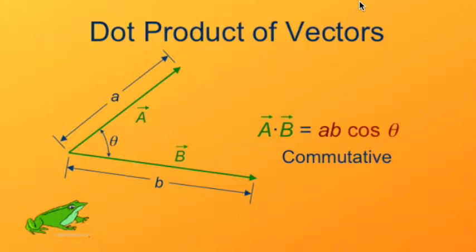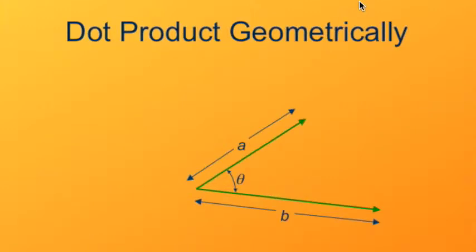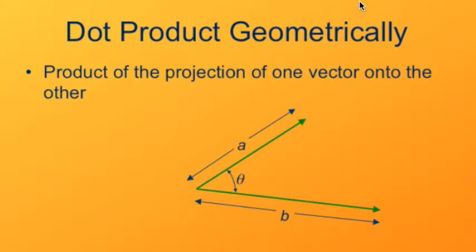There's kind of a neat interpretation of the dot product geometrically, and it can be thought of as the overlap between the two vectors. If you project one vector onto the other vector, in other words, if you take the component of one vector in the direction of the other and multiply that by the other vector, that will give you the dot product.